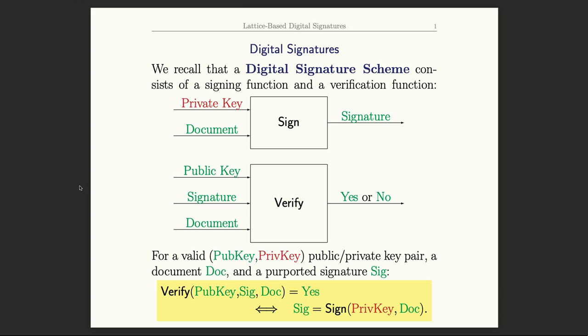the verification says that the signature is correct and valid if and only if the signature came from signing the document with Alice's private key.